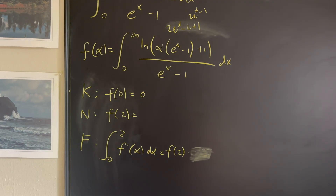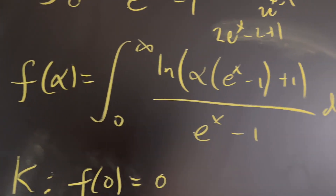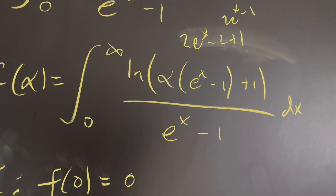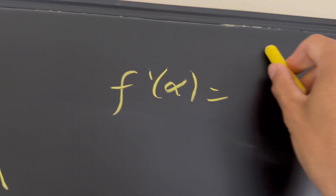If you haven't taken calculus three, the following step will be a little difficult. What I'm doing is taking the partial derivative with respect to alpha — integrating under the integral sign, which is Leibniz's rule. I call it the Feynman technique because that's how he popularized it. By Leibniz's rule, we can take the partial derivative inside the integral, treating every variable other than alpha as a constant, so x is treated as a constant.